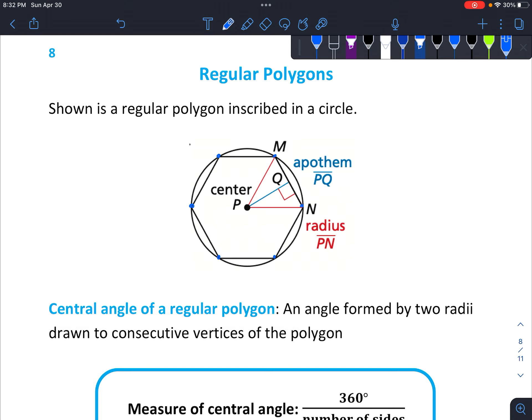And there's something called an apothem. So PQ, that's basically the distance from the center to the center of one of the sides. And you can see it would make a right angle, since it's the closest distance to that side.